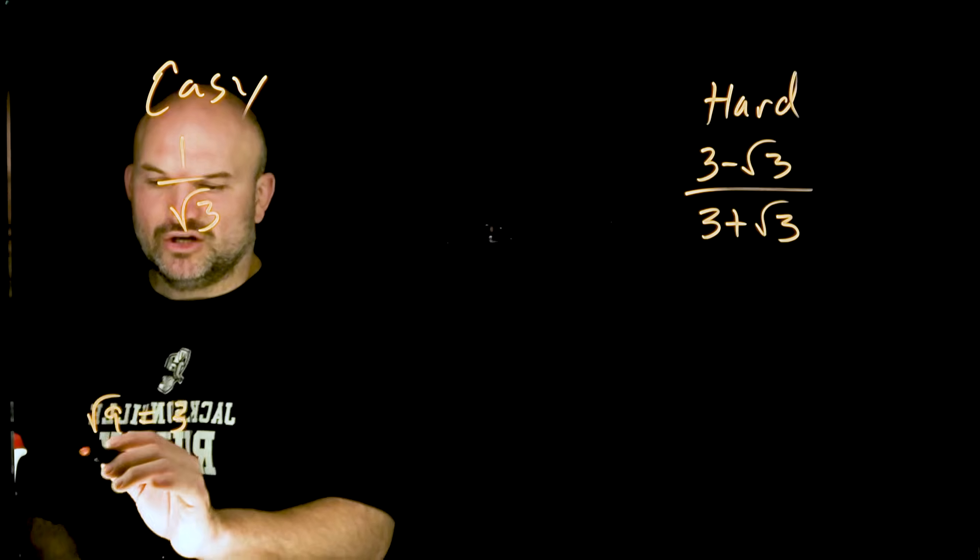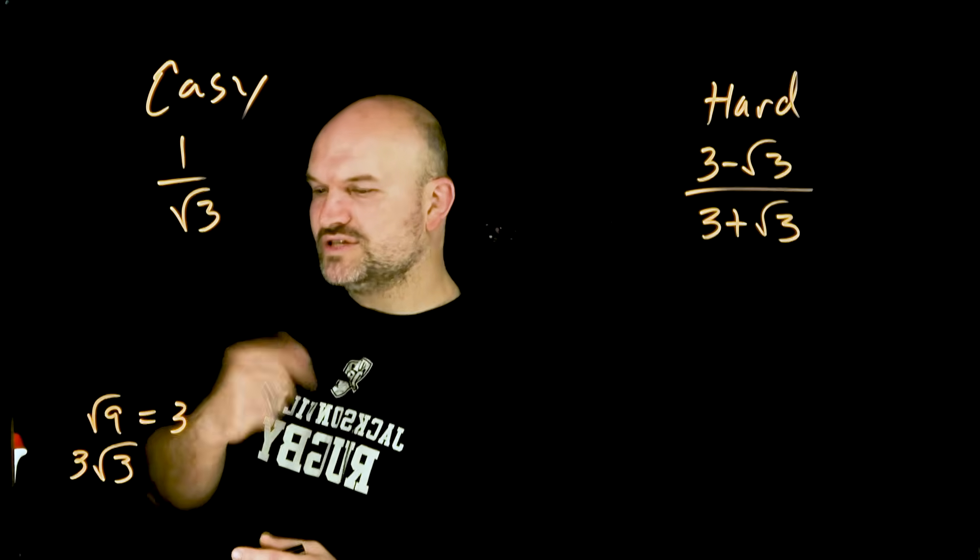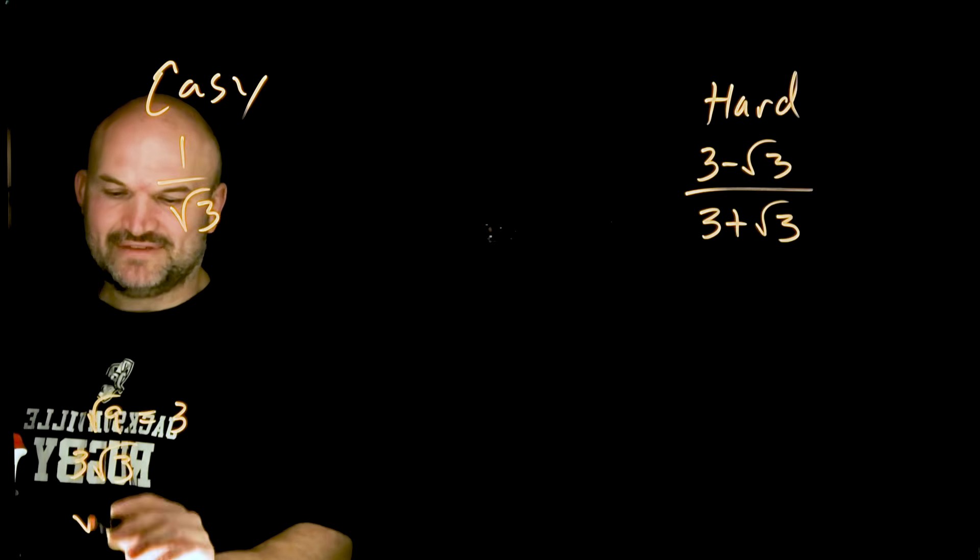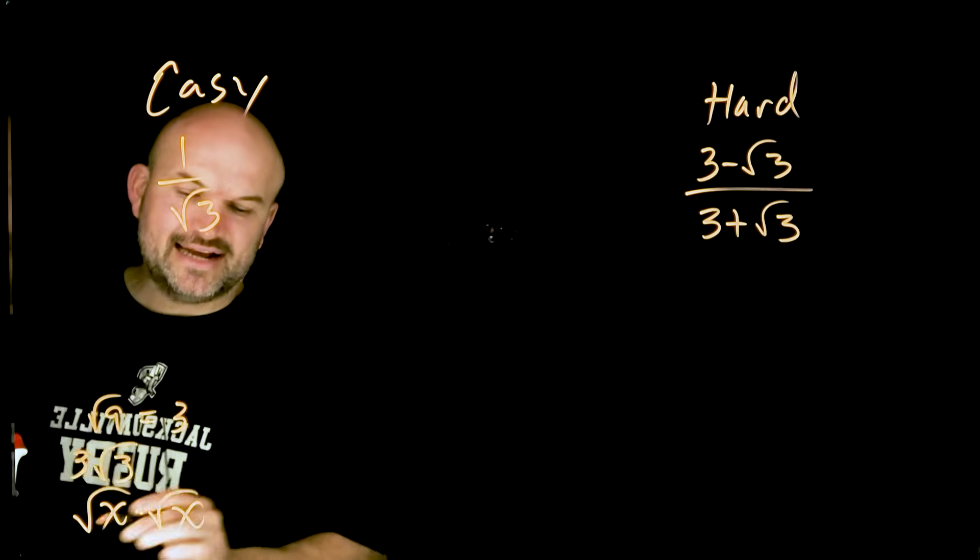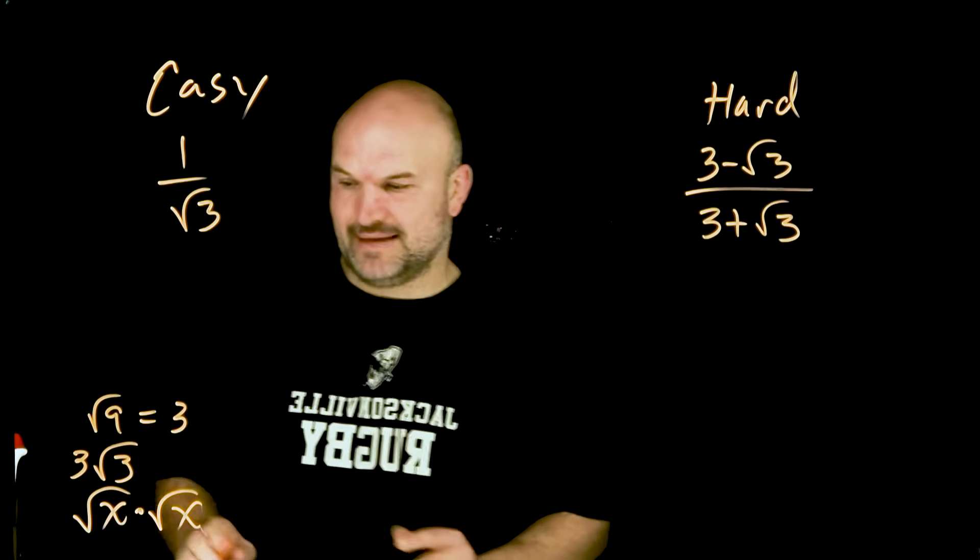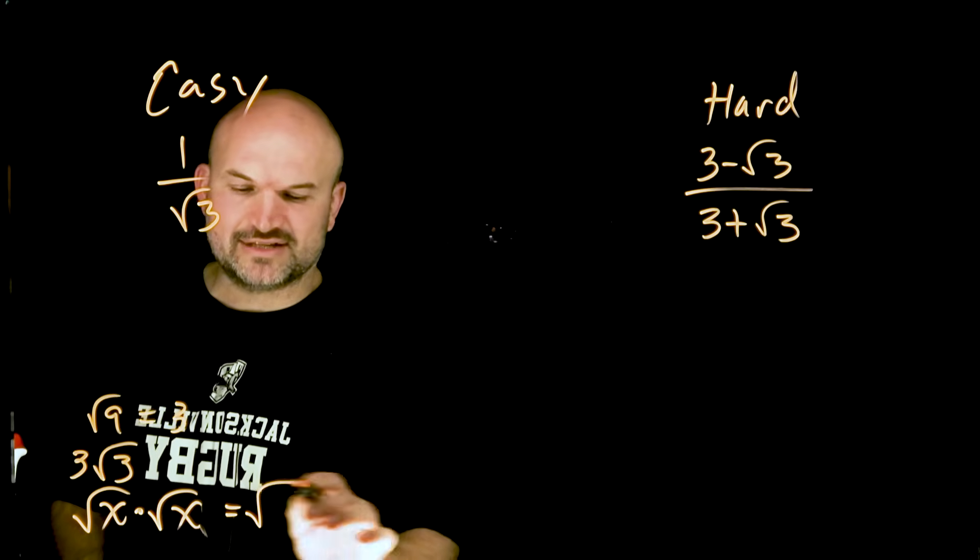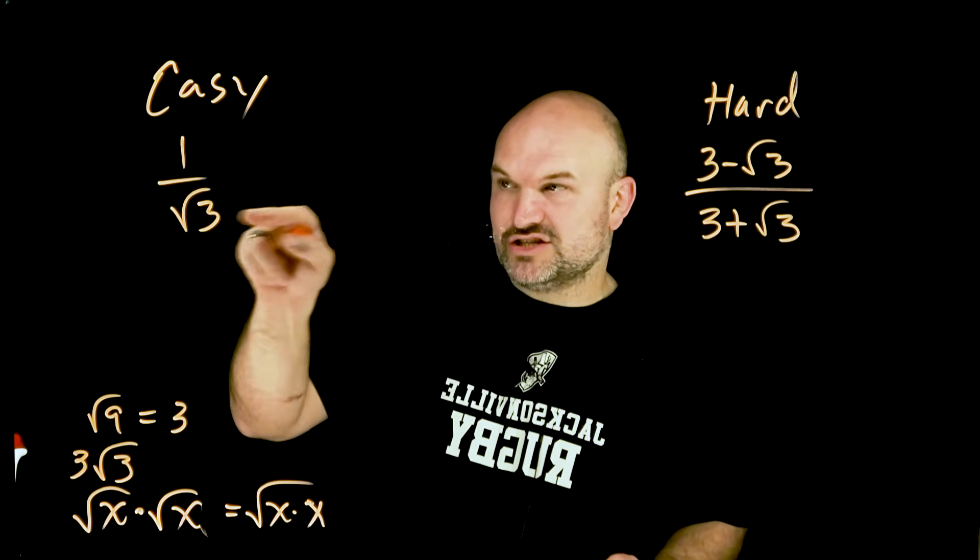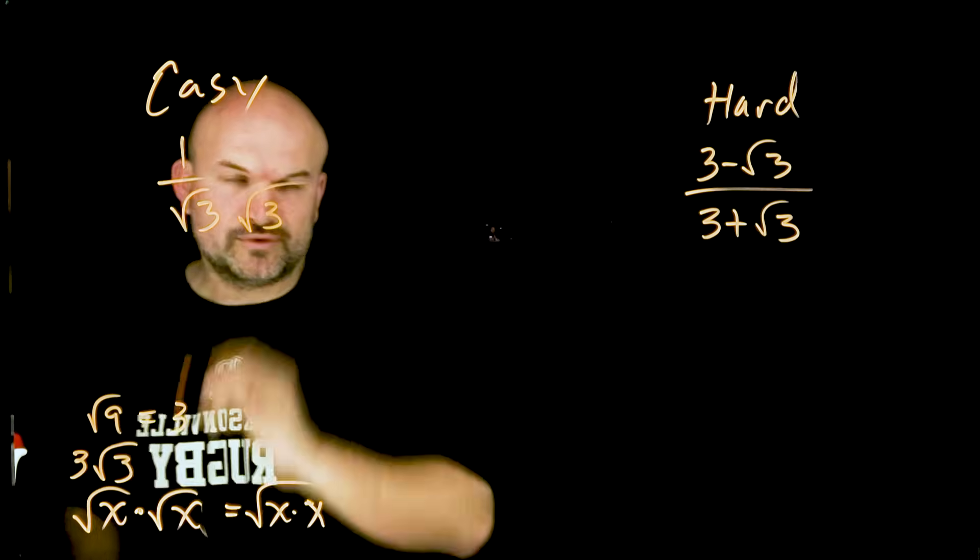We simply just can't multiply a 3 times the square root of 3, because our rules of radicals state that if we're going to multiply inside a radical, we have to have the index be exactly the same, meaning they both need to be the square root, and our radicand needs to be exactly the same. So if I had the square root of x times the square root of x, I could rewrite that as the square root of x times x. So if I need to multiply this 3 under the radical, I need to multiply it by the square root of 3 in the denominator.